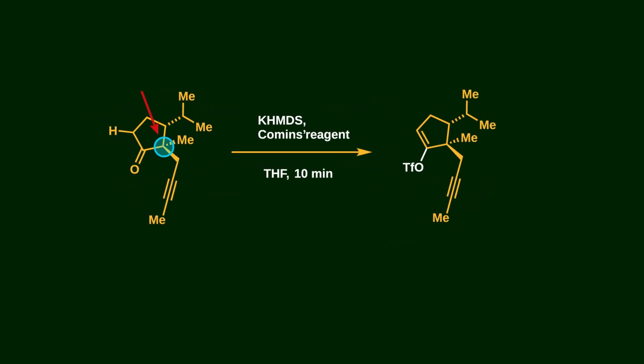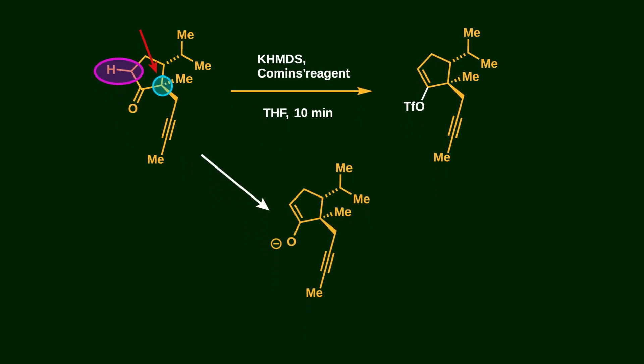In this compound, there is no alpha hydrogen at its position, but another alpha acidic proton is open for business. So KHMDS abstracts a proton to produce the enolate.